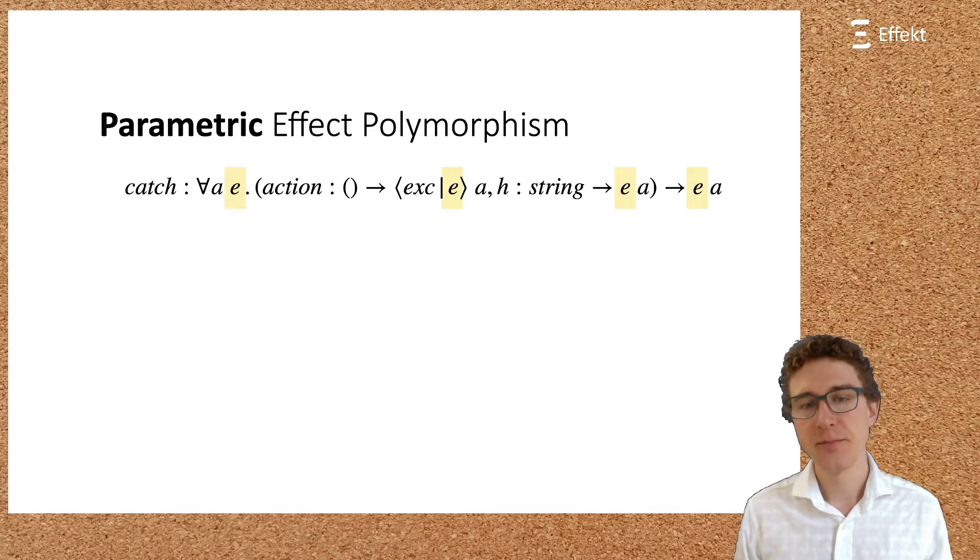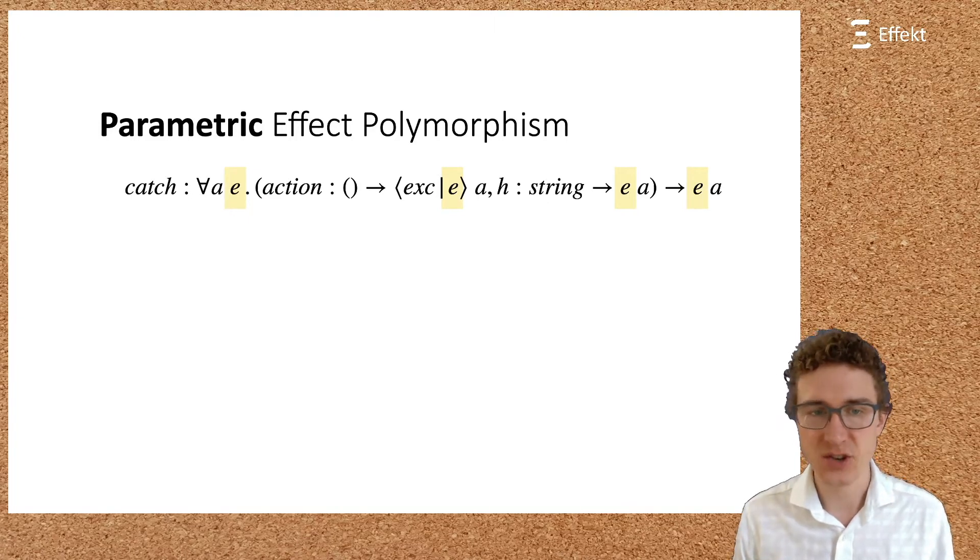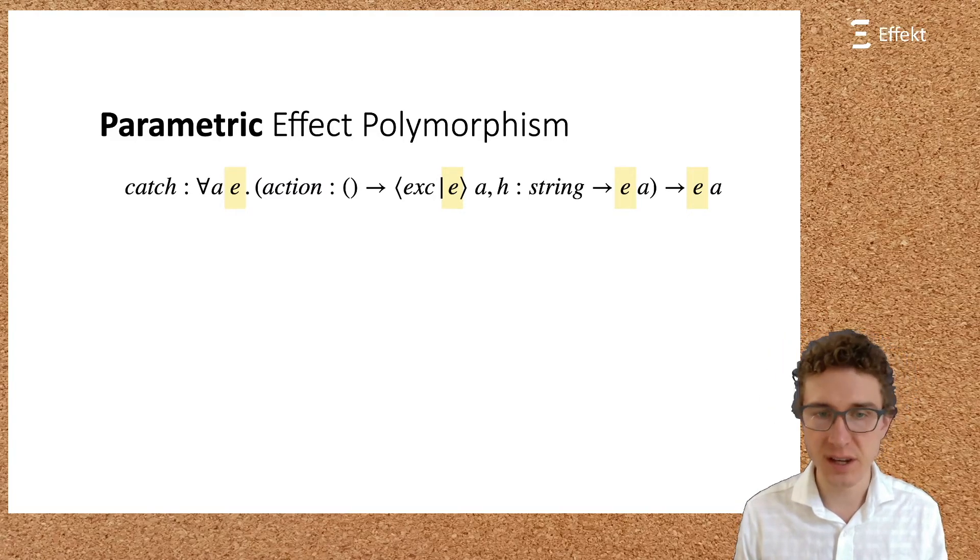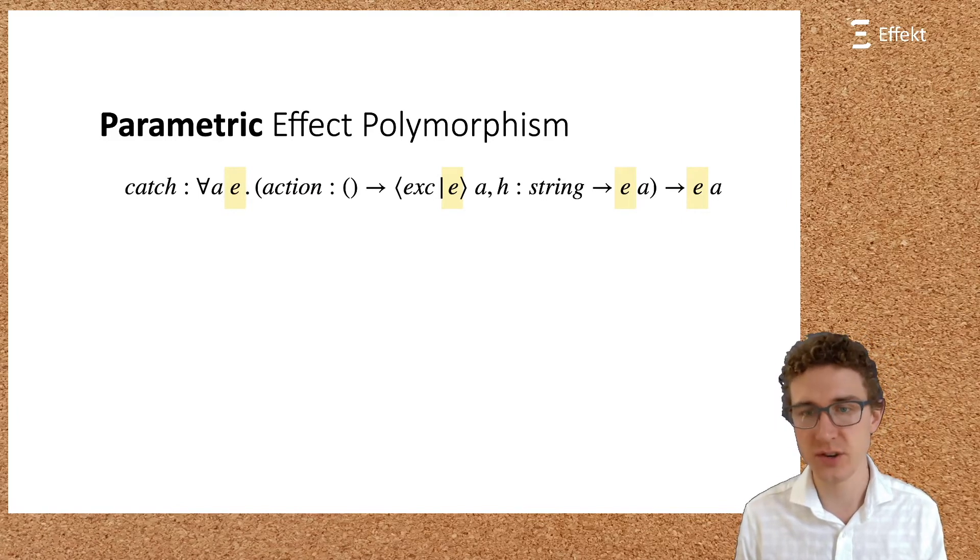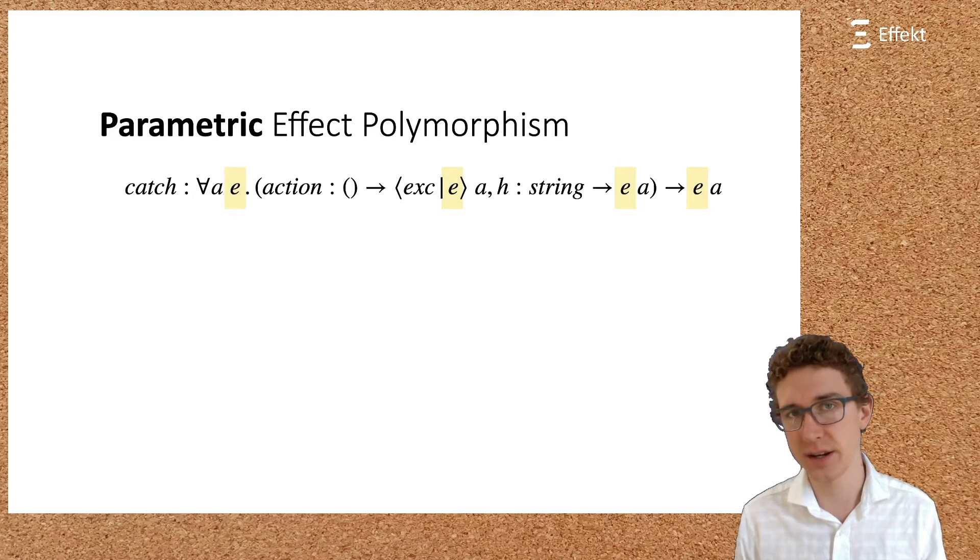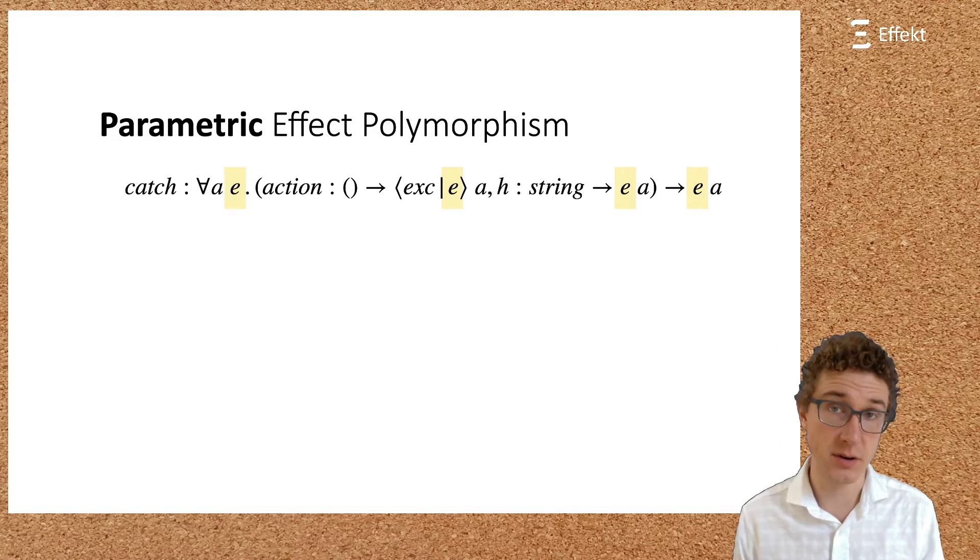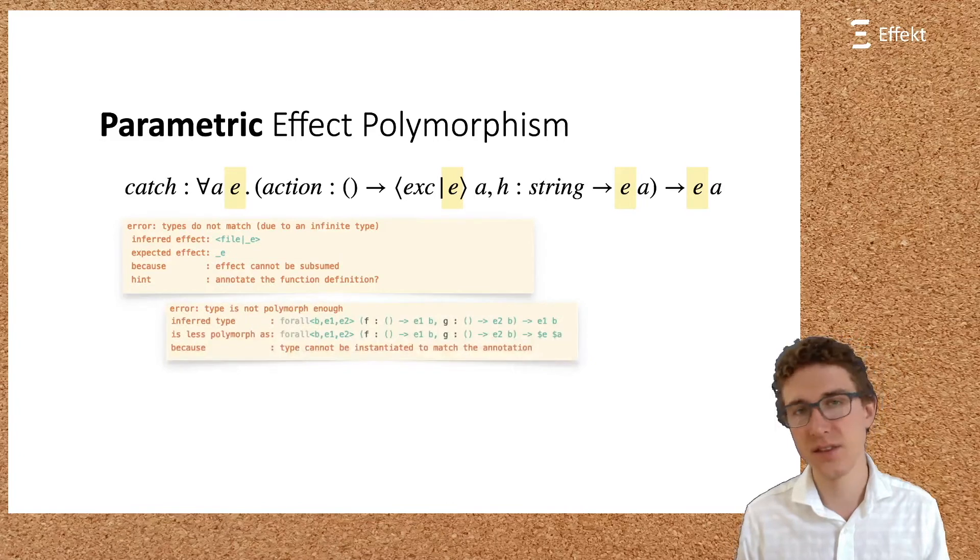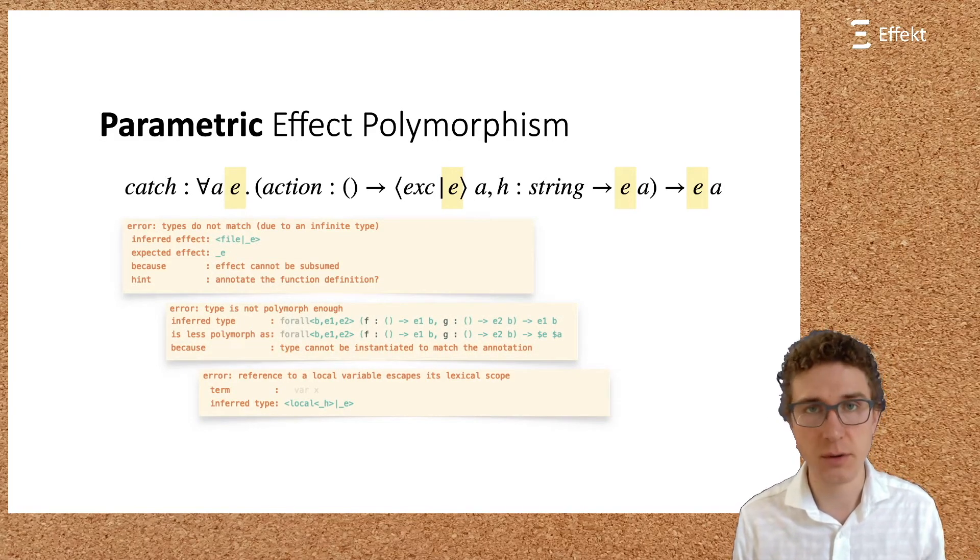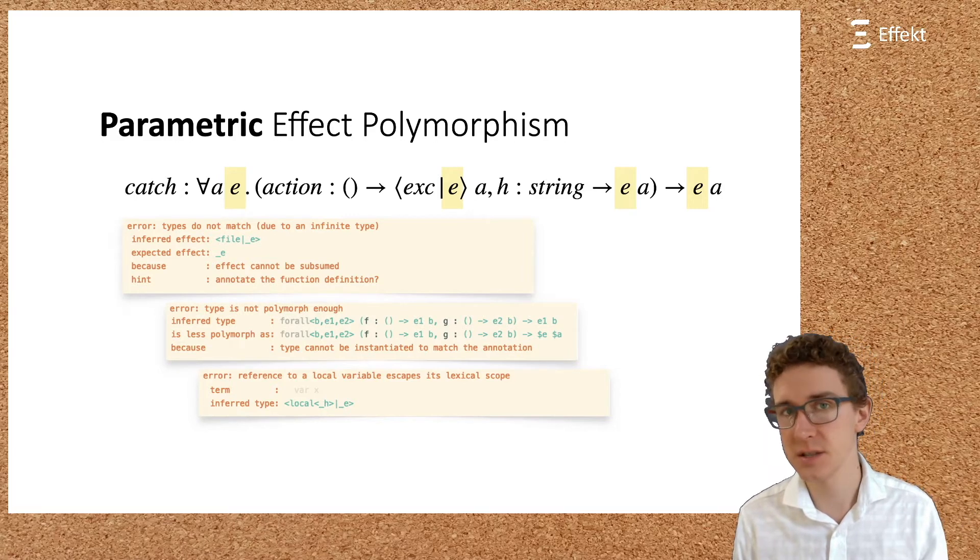Effect polymorphism is great since it allows us to use the catch function with many different argument functions for action, using potentially different effects. Parametric effect polymorphism is common practice in popular research languages like COCA, FRANK, or Helium. However, from a practical point of view, parametric effect polymorphism can quickly become verbose and complicated. Programmers are then confronted with type errors like this, this, or this. While these example error messages are taken from the COCA language, the problem is not specific to COCA, which is a great language.